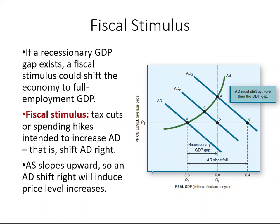The two key questions are: How much do we want to shift the AD curve to the right to close the recessionary GDP gap? And second, how can we induce the desired shift? We know we want to shift the curve to close the gap, but how much policy do we need to implement so that this gap can really be closed? That is why next we will discuss aggregate demand shortfall.